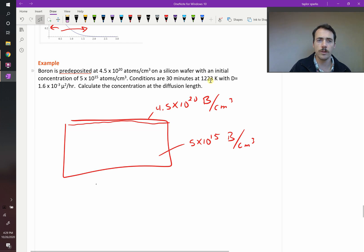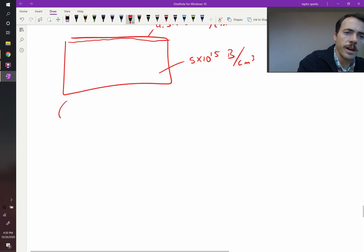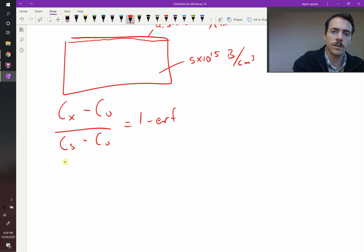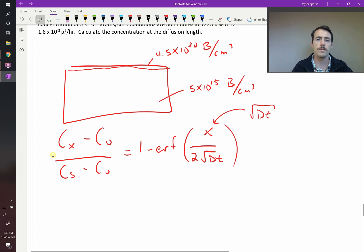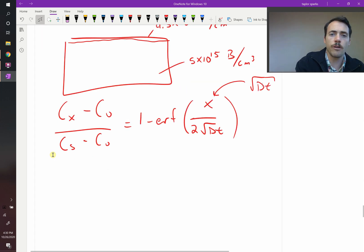Then it says the conditions are 30 minutes at 1223 Kelvin with a diffusion coefficient that's given here in micrometers per hour. Calculate the concentration at the diffusion length. So we can do this. What it's asking us to do is solve for cx. So we know that (cx - c0)/(cs - c0) is equal to 1 minus the error function of x/(2√Dt). Now they're saying to solve it at the diffusion distance, so we're going to plug in √Dt for that value. So if we plug that in, then this becomes the error function of 1 half.